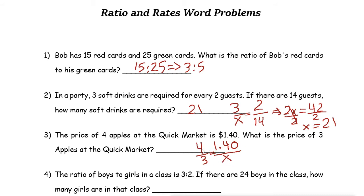Here we can use cross multiplication. 4 times x is 4x and 3 times 1.40. So 4x equals to 3 times 1.40.